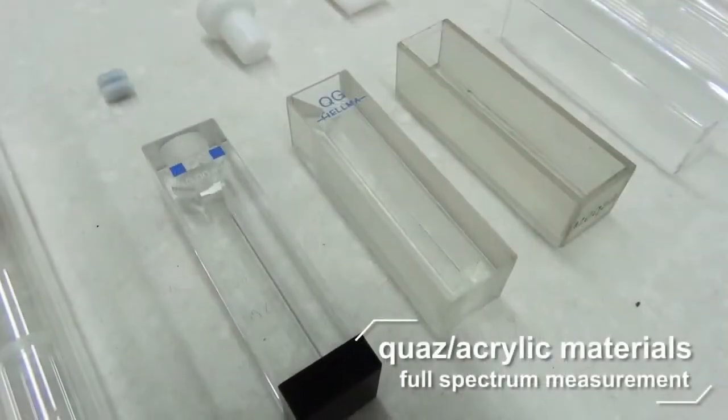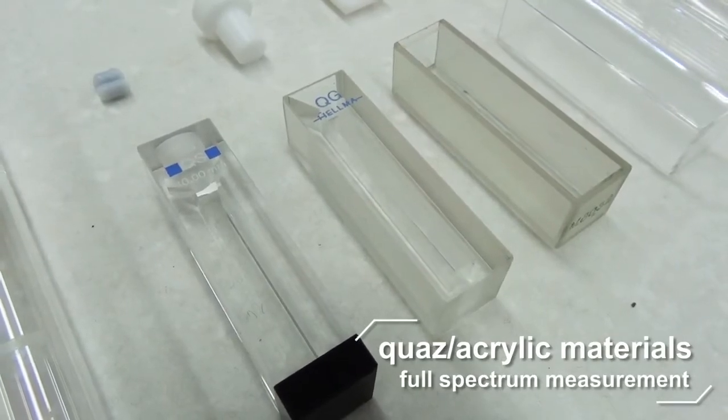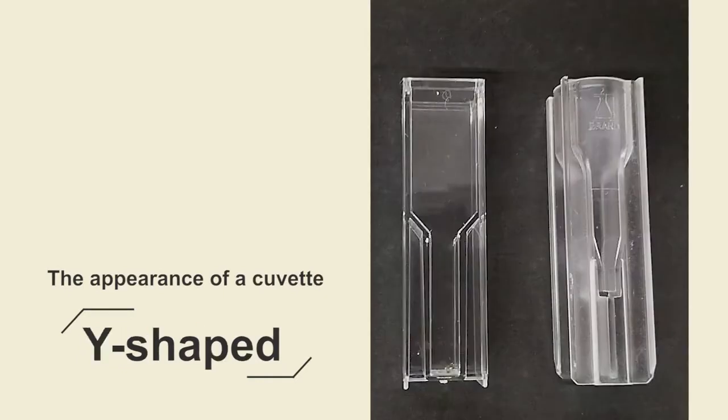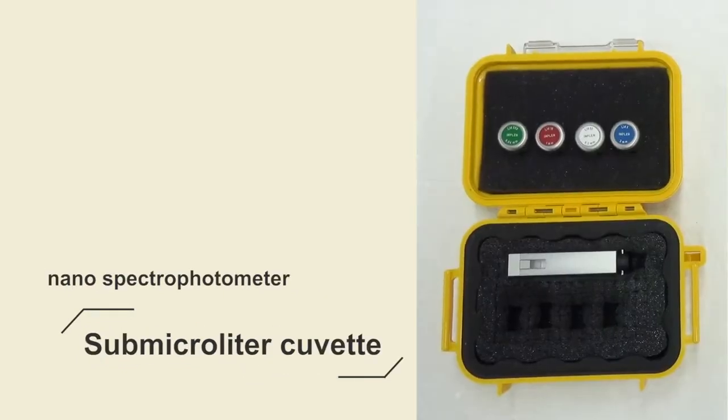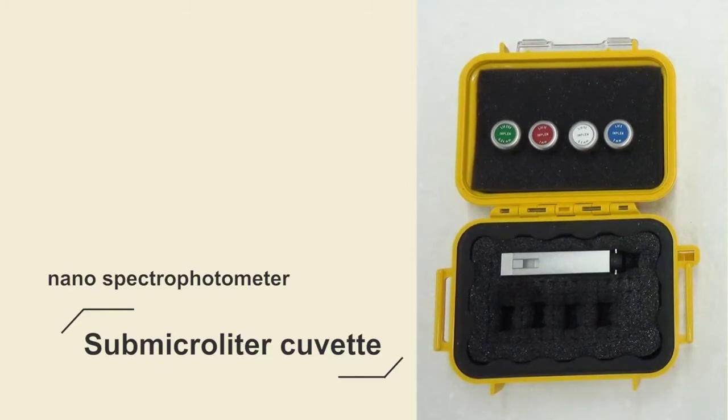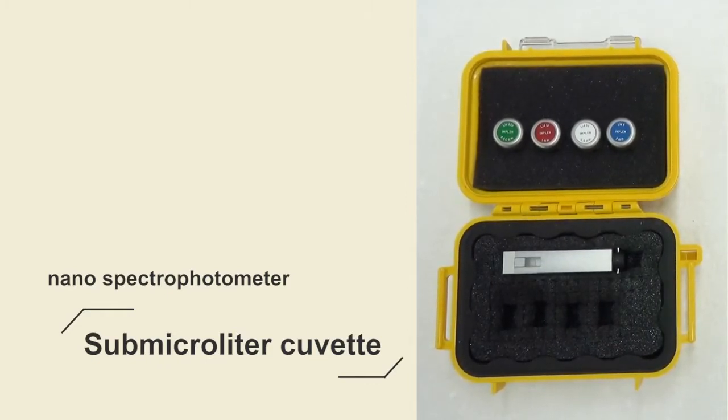Quartz or acrylic materials, on the other hand, are suitable for full-spectral measurement. The appearance of a cuvette may be standard or Y-shaped. The submicroliter cuvette for the nanospectrophotometer features a patented internal design and requires a proper lid based on the kind and concentration of the samples.